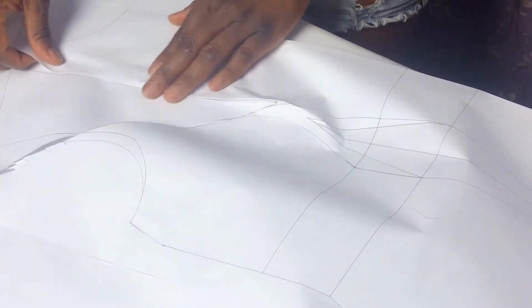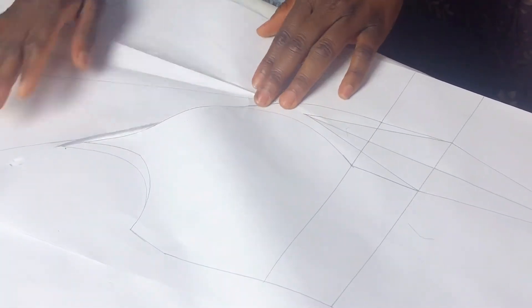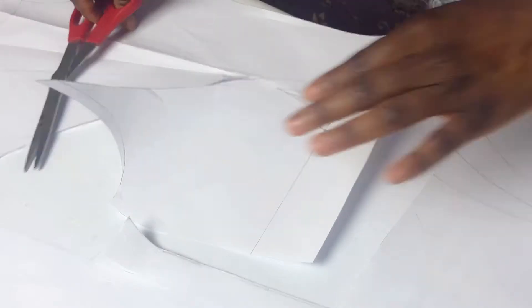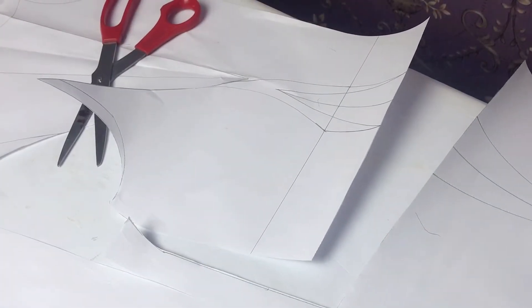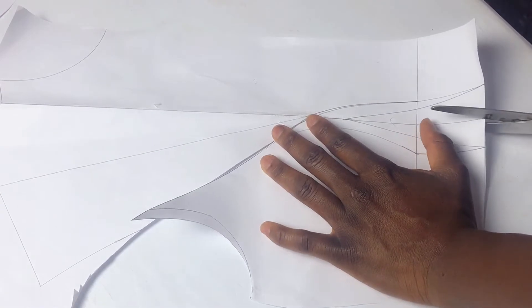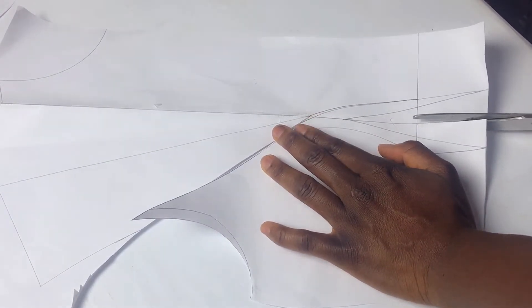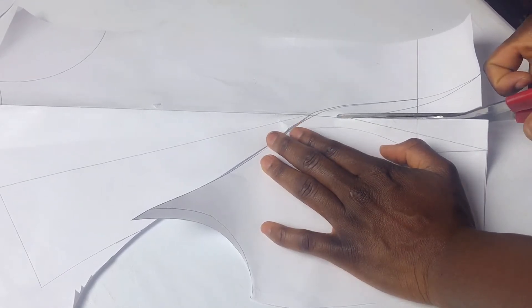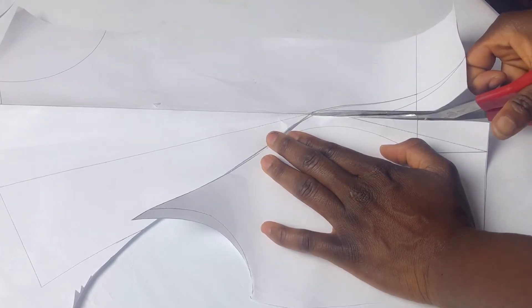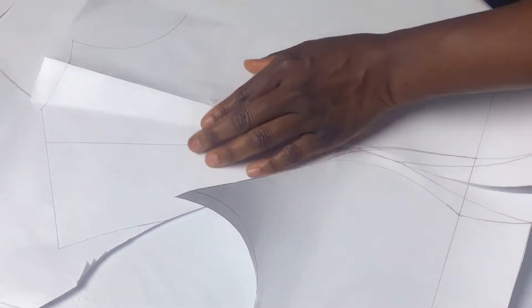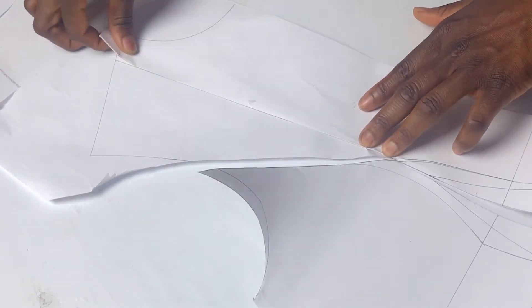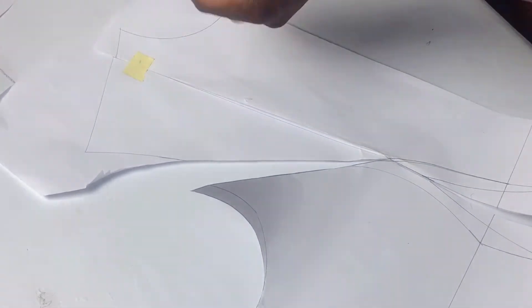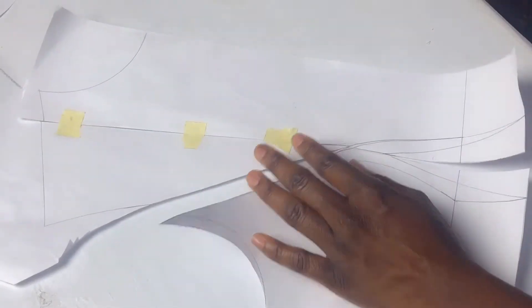Now I'm slashing the armhole line but if you notice my pattern paper is squeezed, it's not laying flat. This is because I have closed my shoulder dart. So now I am going to reopen that dart, go down to my waistline, slash the middle dart leg all the way to the bust point, then close my shoulder dart. This makes my paper lay flat and enables me to slash the point D easily.